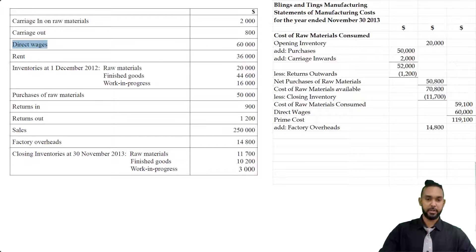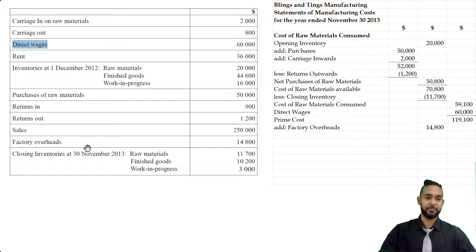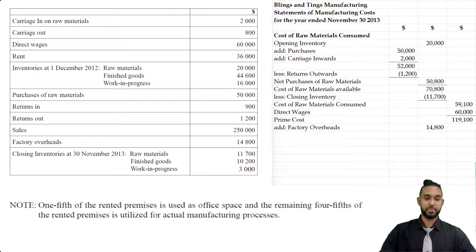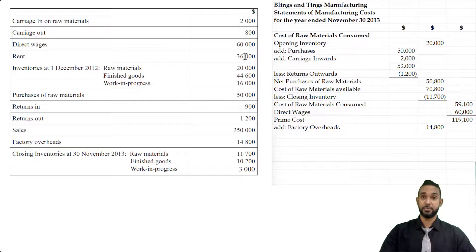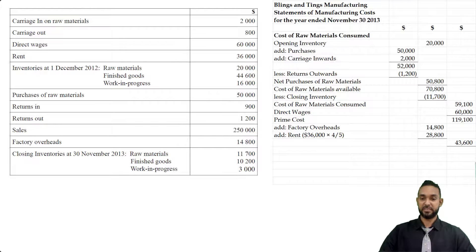Now we have to deal with the factory overheads. They actually gave us a figure for factory overheads, but there is one other item to consider from the note: one-fifth of the rented premises is used as office space and the remaining four-fifths is for manufacturing. This rent figure of 36,000 has to be apportioned between the manufacturing account and the income statement. We find four-fifths of 36,000, which gives us 28,800. Adding that to the overheads gives us a total of 43,600, and that gives us the total cost of production for the current period.